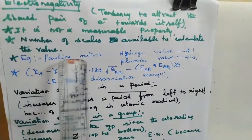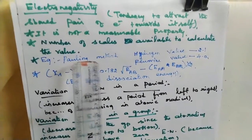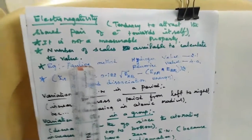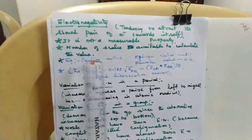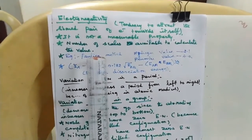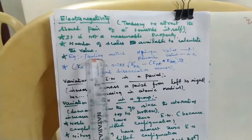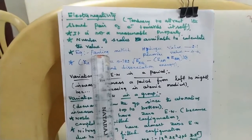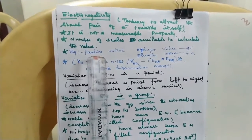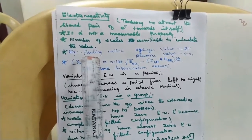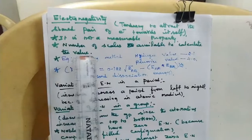One pair of electrons is shared in this bond formation — it is a covalent bond. After the bond formation, Chlorine attracts the bonded pair of electrons. As a result, Chlorine will get a partially negative charge and Hydrogen will get a partially positive charge. This tendency is Electronegativity.